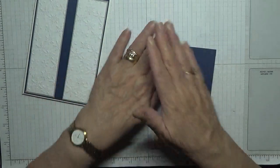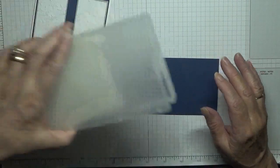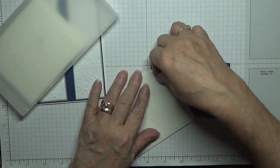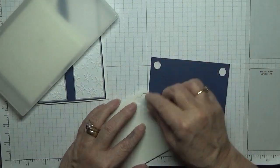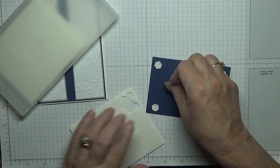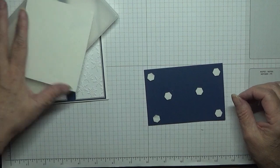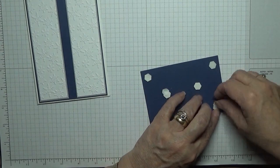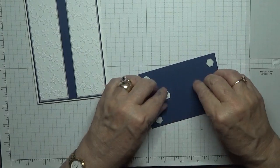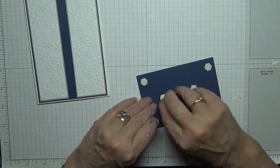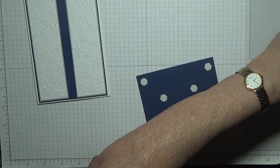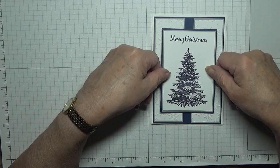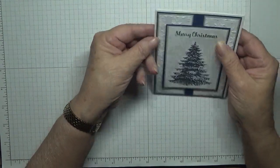And this is going to go on dimensionals. I'll take back it off, not the dimensional. Now we're going to place this in the middle of our card. There we are.